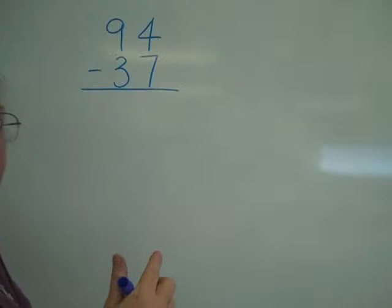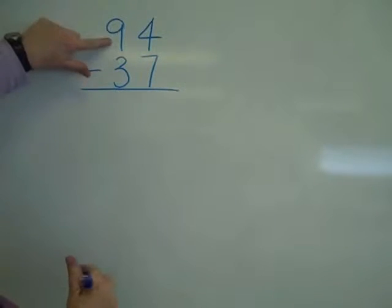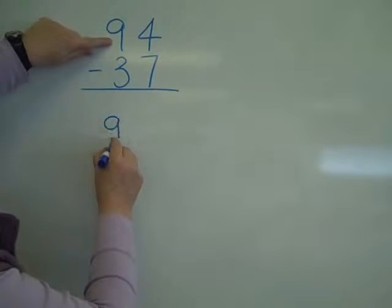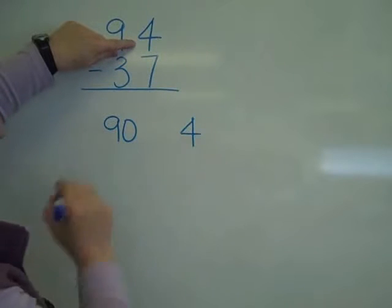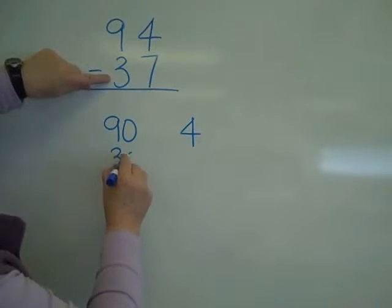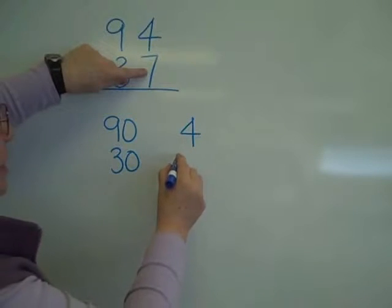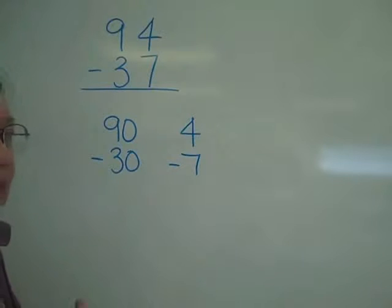But instead, what I want to do is look at place value. This 9 actually means 90. This actually means a 4 because it's in the 1's place. The 3 is a 30, and that's a 7 because it's in the 1's place. So what I'm actually going to be doing is just subtracting the places.